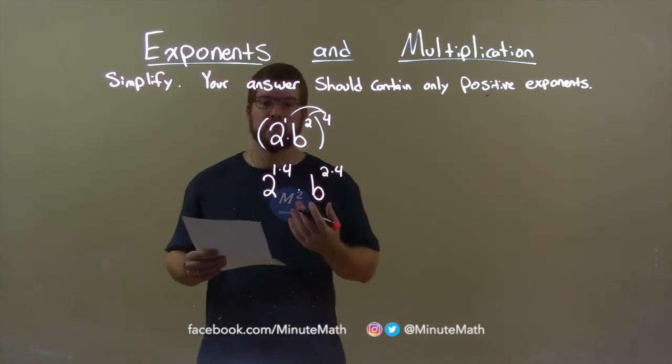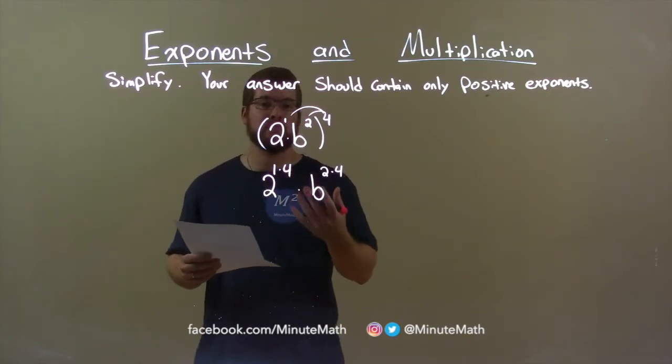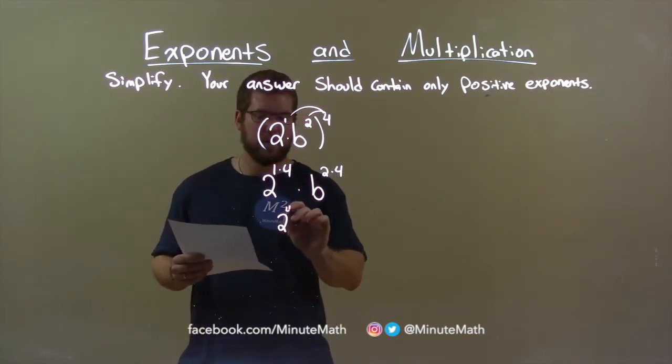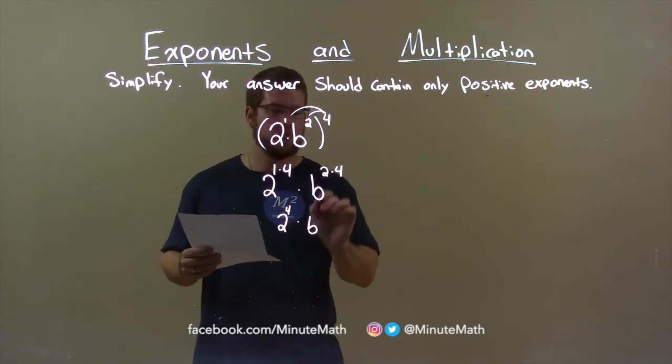Now let's simplify. 1 times 4 is 4, so we have 2 to the fourth power here. And b, 2 times 4 for the exponents, is an 8.